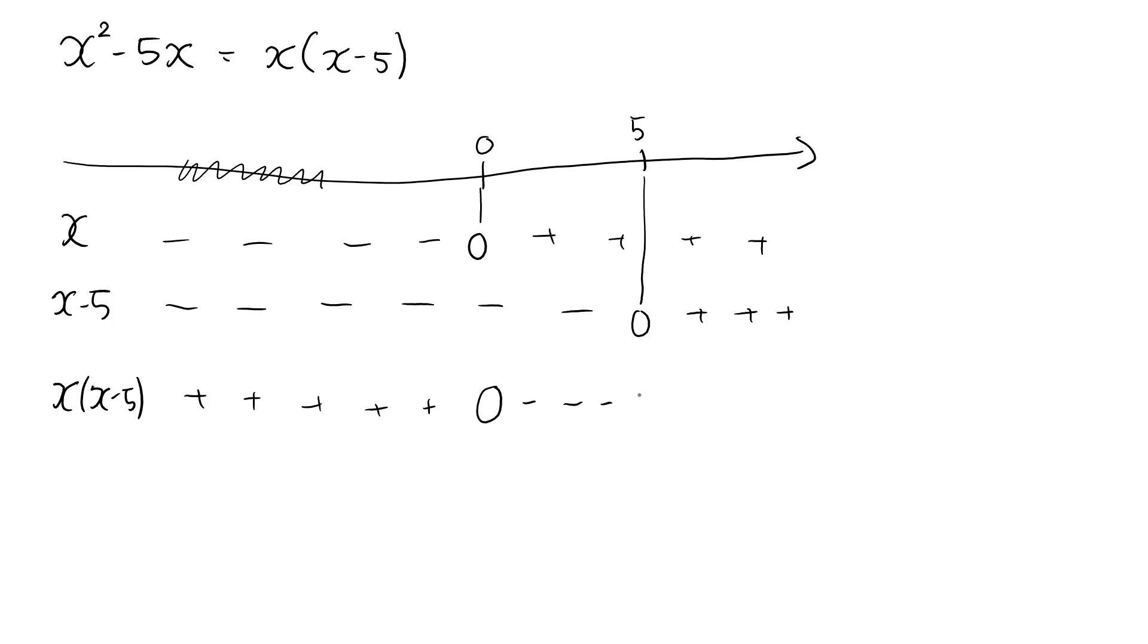When we reach 5, the second expression is 0, and the product is 0 as well. Finally, we get to this region when x is greater than 5. Now I have a product of two positive numbers, which will be positive, and the sign diagram is complete.